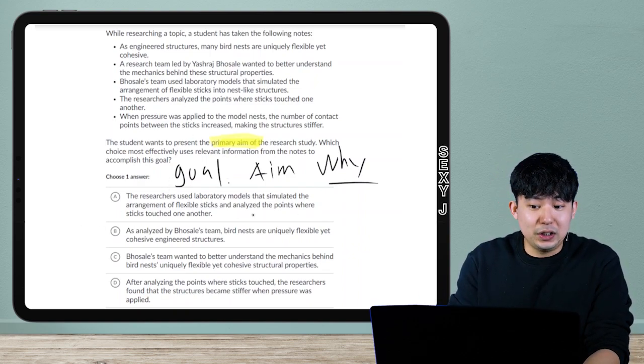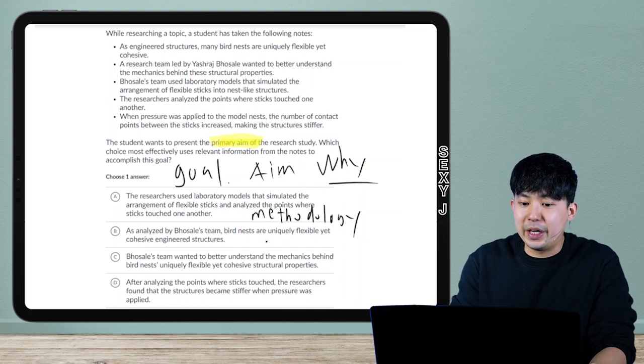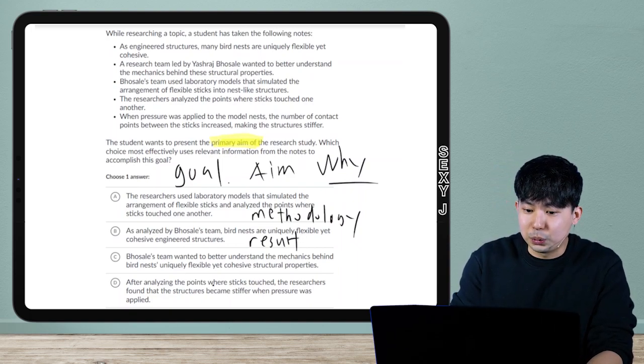A, this is just what they did. If this is the answer, the question will ask methodology, which we will do another video on. And then B, this is a result. Again, that's a separate video.